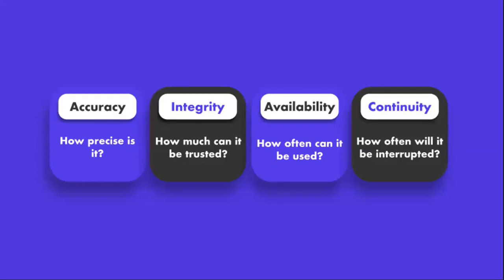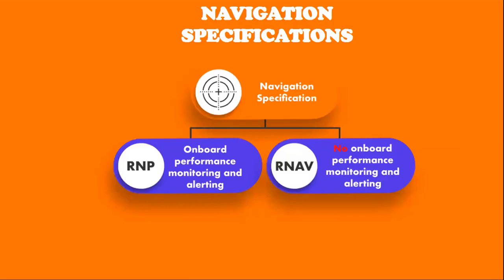Accuracy refers to how closely the aircraft's actual position must match its intended position. Continuity refers to the ability of the navigation system to maintain the required level of performance without interruption, ensuring the system remains reliable throughout the flight. Availability is a measure of how often the required level of performance can be achieved — the percentage of time the navigation system is expected to meet specified accuracy and integrity requirements. Integrity refers to the trustworthiness of the navigation system, ensuring that information provided to the flight crew is reliable and accurate. RNAV specifications like RNAV-5 and RNAV-1 ensure specific performance standards and do not need on-board performance monitoring and alerting. Specific approvals are required for RNAV operations.